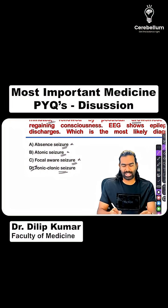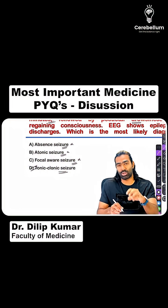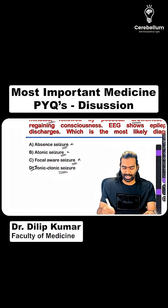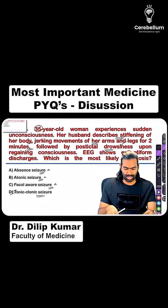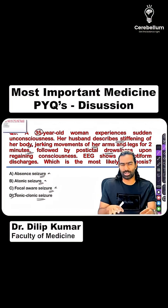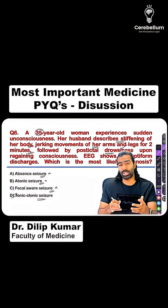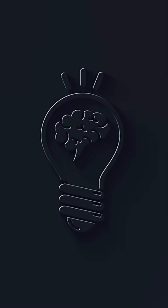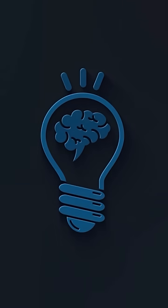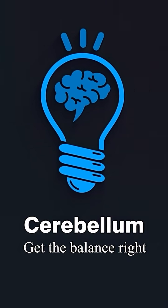And focal-aware seizure, which is also called focal seizure without discognitive features, or previously called simple partial seizure, is one where the patient will be aware and knows what's happening — unlike what has happened in this case. So, that's not the diagnosis. The right answer for this question is option D: tonic-clonic seizure, or GTCS.